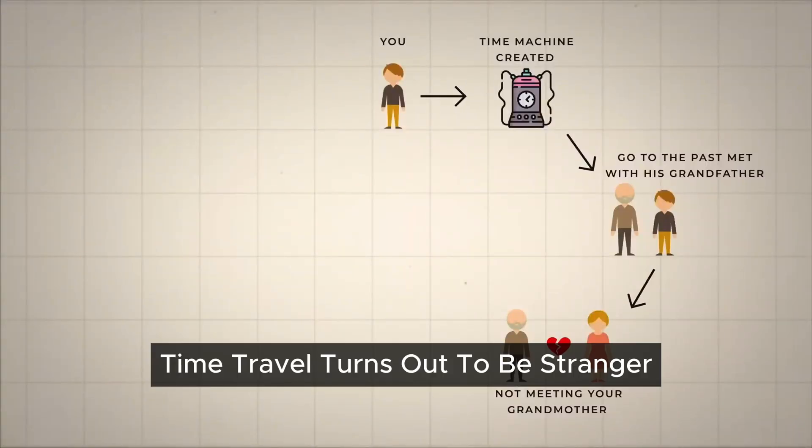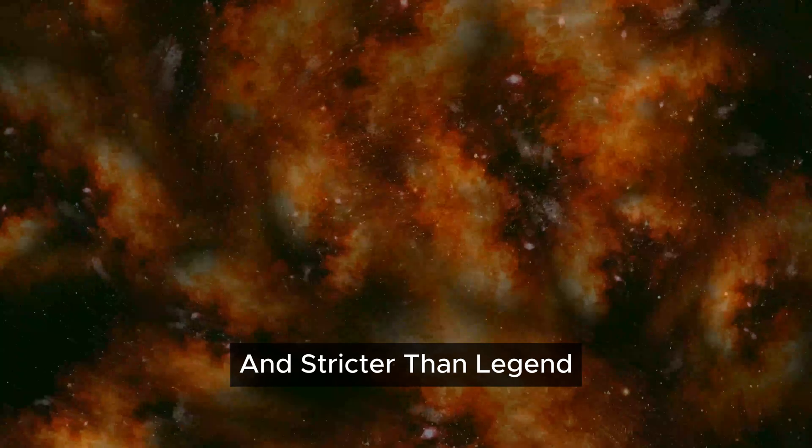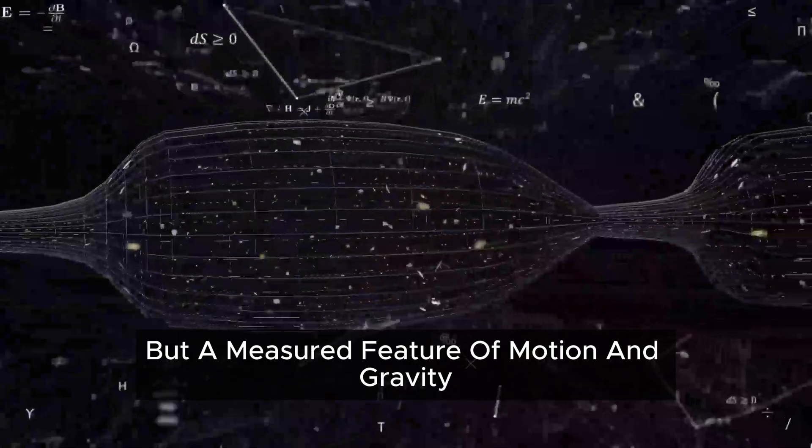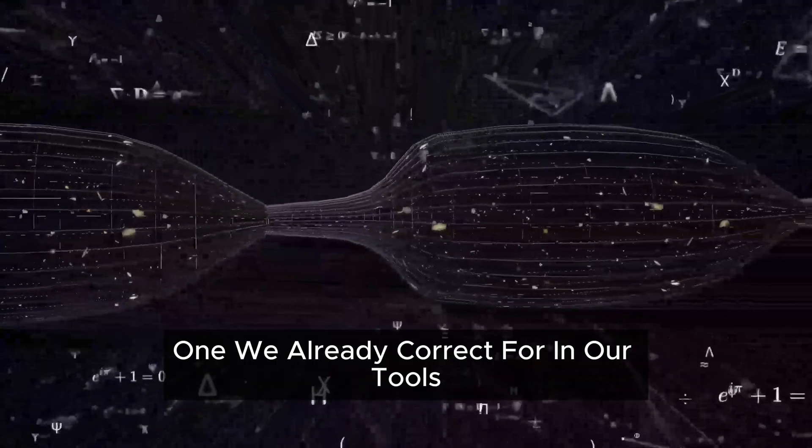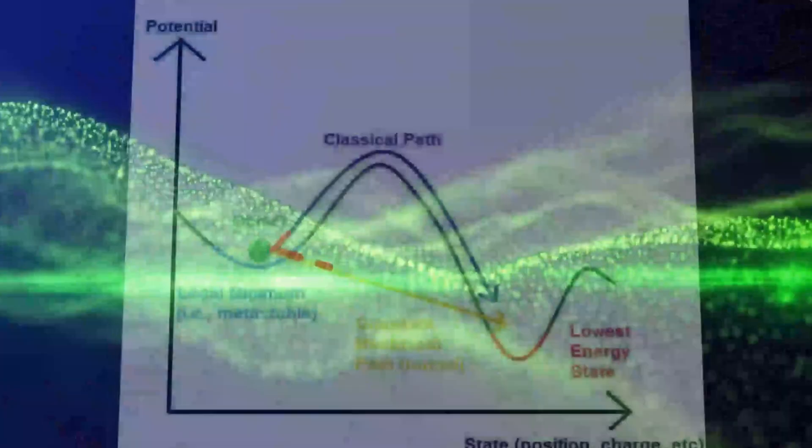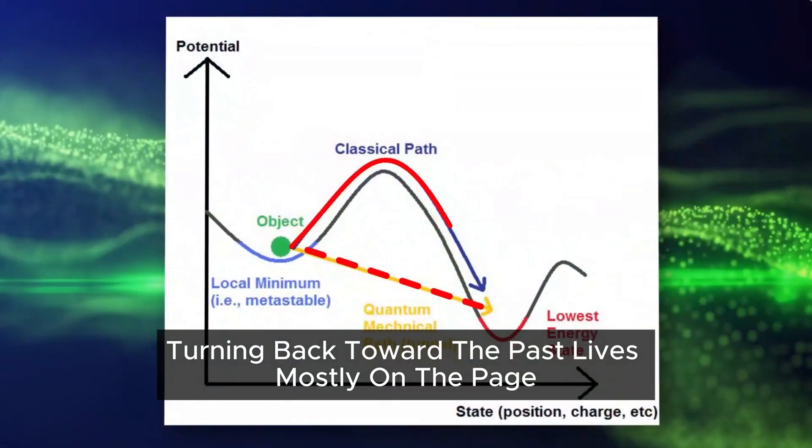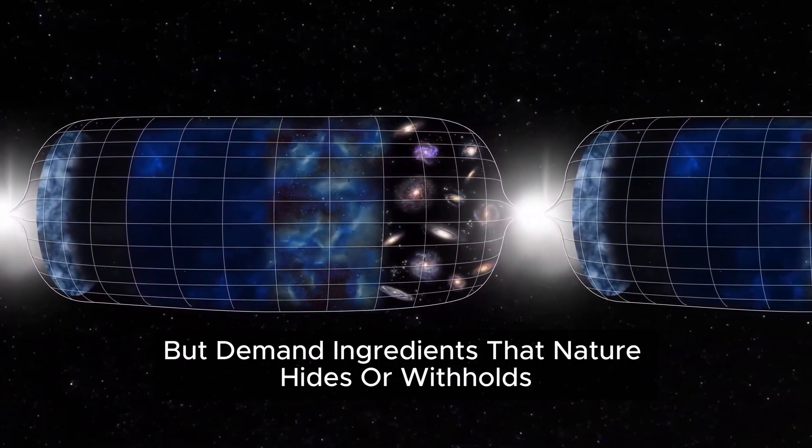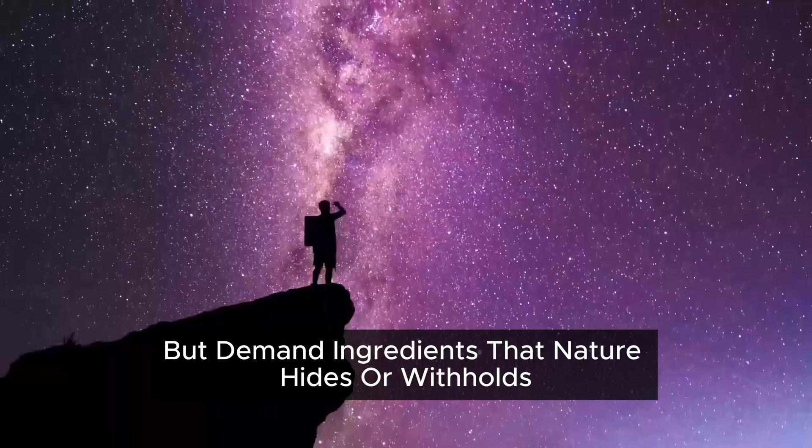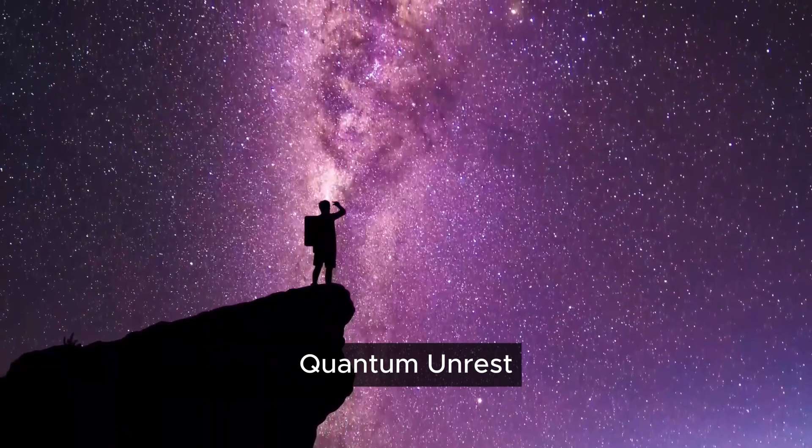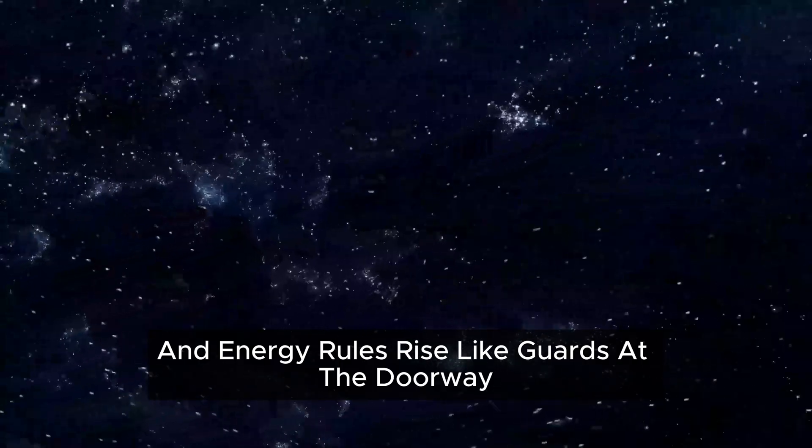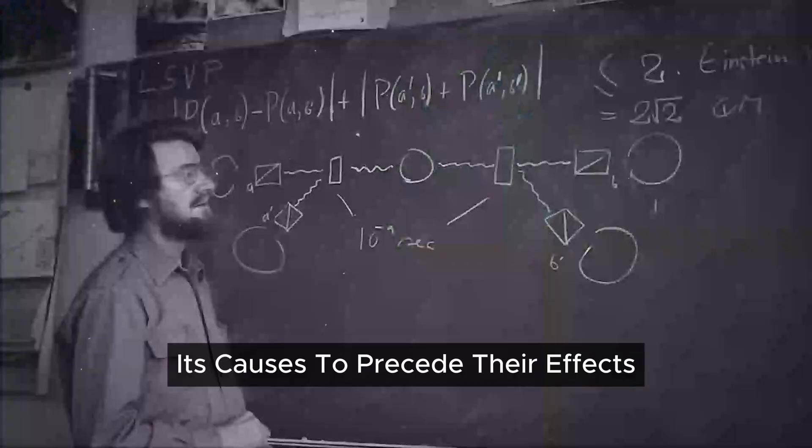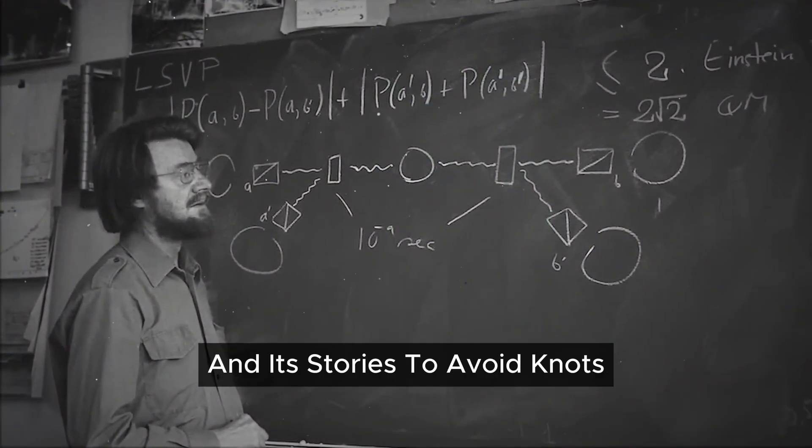Time travel turns out to be stranger and stricter than legend. Moving into the future is not a miracle, but a measured feature of motion and gravity, one we already correct for in our tools. Turning back toward the past lives mostly on the page, where wormholes and rotating geometries beckon, but demand ingredients that nature hides or withholds. Quantum unrest and energy rules rise like guards at the doorway, hinting that the universe prefers its causes to precede their effects and its stories to avoid knots.